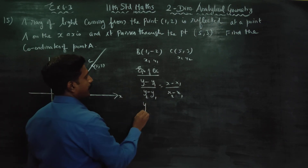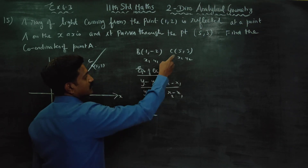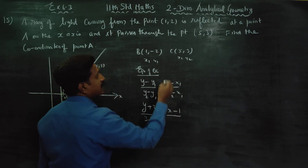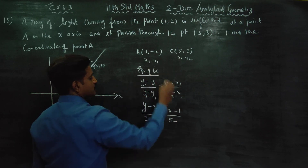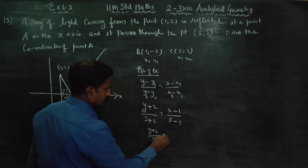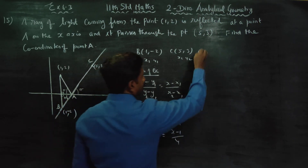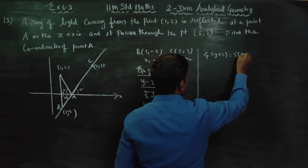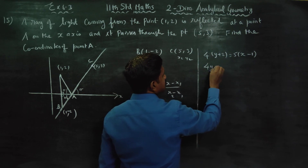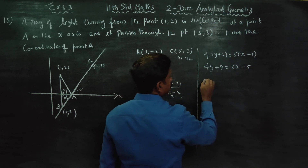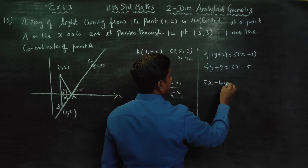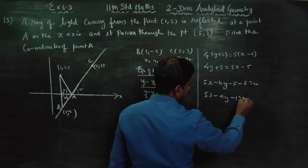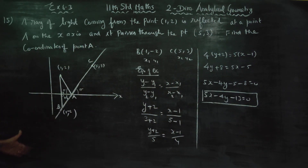x1 is 1, y1 is minus 2, y2 is 3. So: y plus 2 by 5 equals x minus 1 by 4. Cross multiply: 4 into (y + 2) equals 5 into (x - 1). So 4y + 8 = 5x - 5, giving 5x - 4y - 13 = 0. This is the equation of BC.